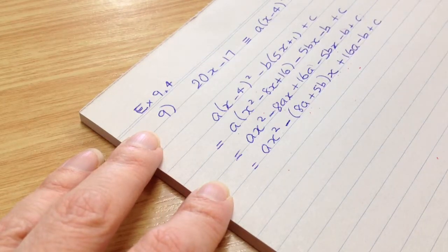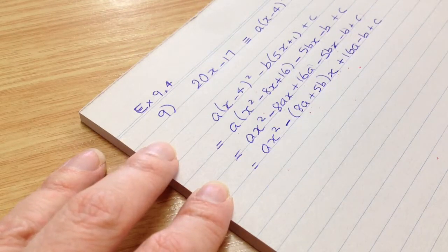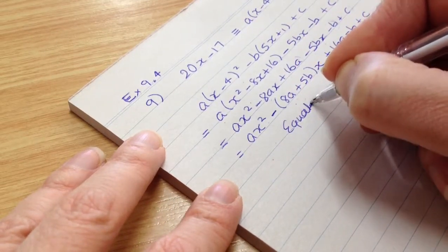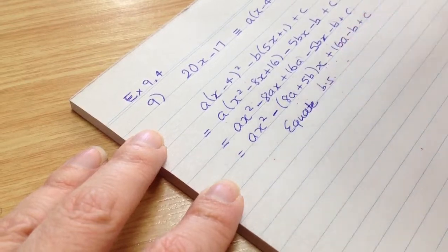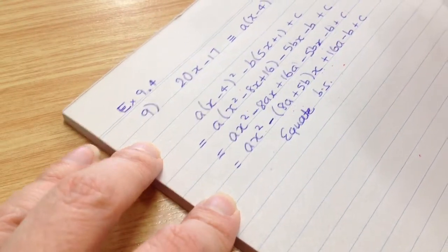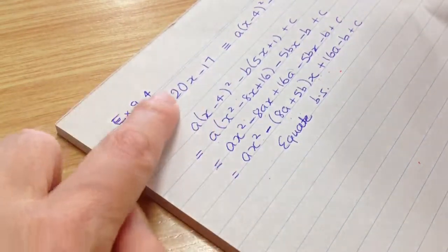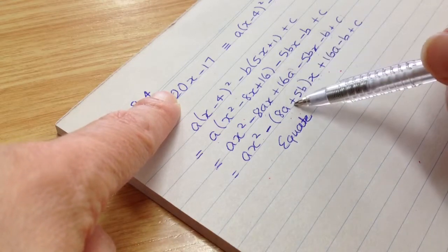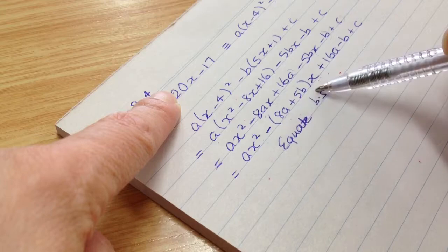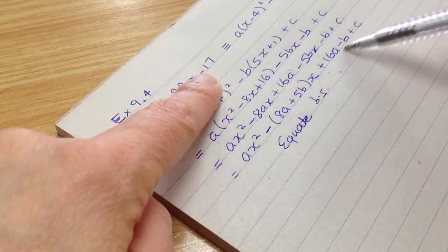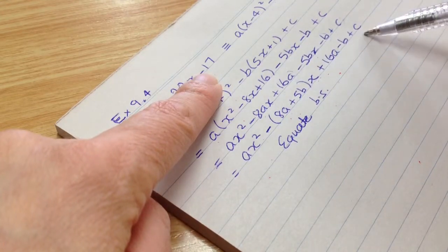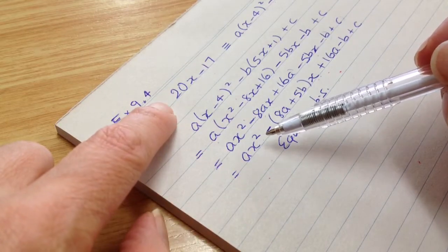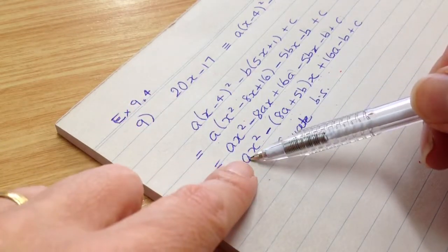All right, okay, so now we're ready to equate, equating both sides. So equate both sides. All right, and that means that we now take the 20x, okay, and equate that with the x term. All right, the minus 17 gets equated with the constants and the zero, zero x squared term.